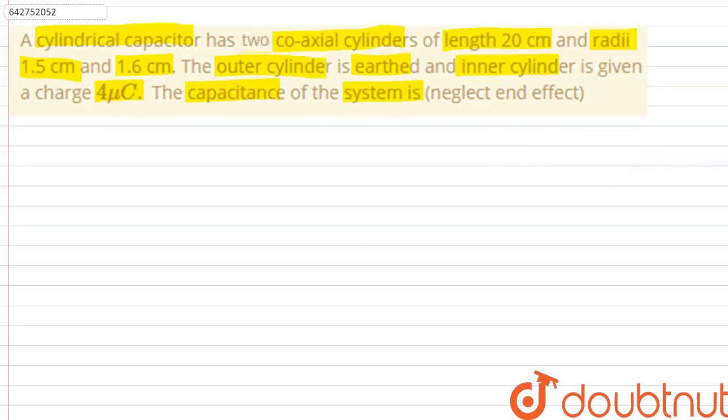So the question is asking us to find out the capacitance of a cylindrical capacitor system which has two coaxial cylinders of radii 1.5 centimeters and 1.6 centimeters and their length is 20 centimeters. We'll begin